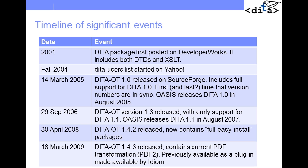Another significant change: in 2009, what was originally known as the Idiom PDF plugin, or PDF2, officially became part of the toolkit distribution. Previously, one had to download it as a separate donated plugin and get it integrated into your setup.